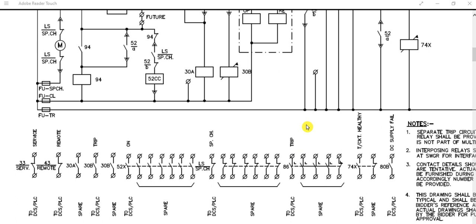This is the 33 in-service position contact. This is one of the breaker auxiliary contacts. This contact is used to indicate that the circuit breaker is in service position, and this signal is going to the PLC or any remote panel. The wiring should be done from this switchgear terminal up to the DCS panel. This contact represents the circuit breaker in-service position.